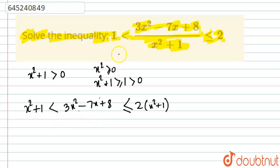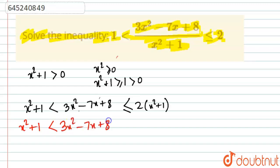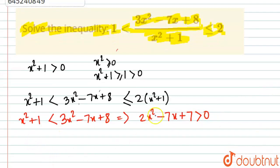Now we solve the two parts separately. The first part: x² + 1 < 3x² - 7x + 8. Rearranging gives 2x² - 7x + 7 > 0. Dividing throughout by 2 (which is positive, so the sign remains), we get x² - (7/2)x + 7/2 > 0.